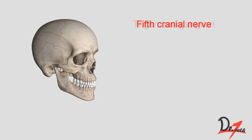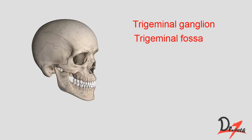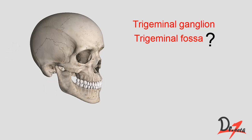All three nerves arise from the trigeminal ganglion, which is a semilunar ganglion lying in the trigeminal fossa. The trigeminal fossa is located on the anterior surface of the petrous temporal bone. So where exactly is this petrous temporal bone?